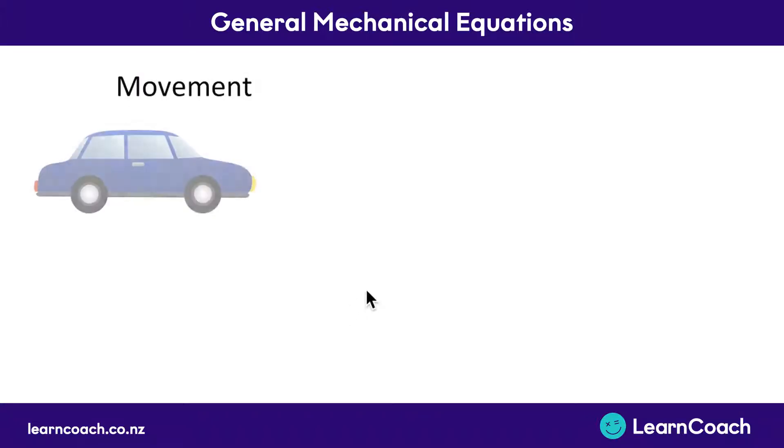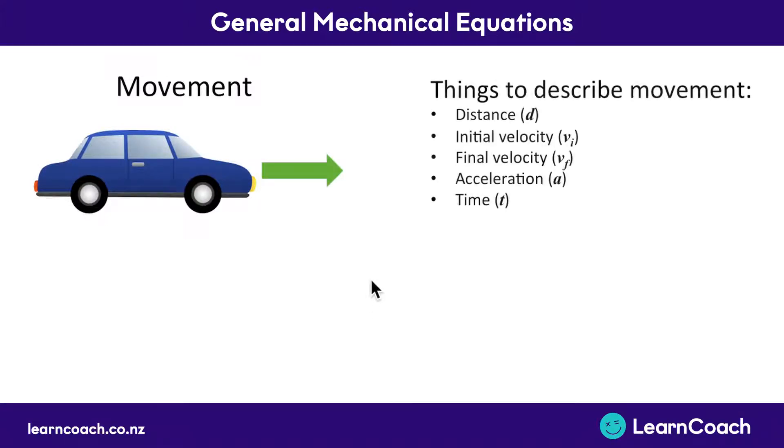So to start with, let's look at something moving, for example a car. There's a whole bunch of ways that we could describe this movement. We could say it's gone a certain distance, it started when it was still, it had an initial velocity of zero, it sped up to a final velocity, it was accelerating, and this all happened over a certain time. All of this list are things that we can use to describe movement.